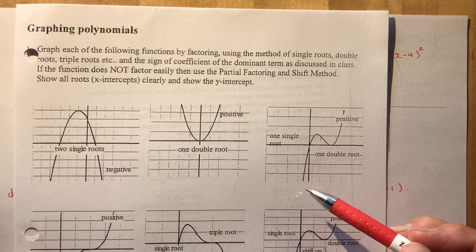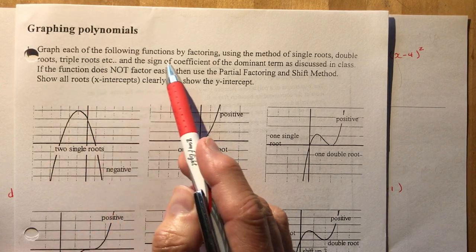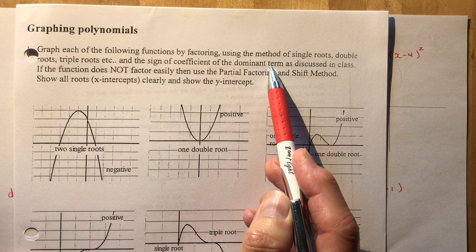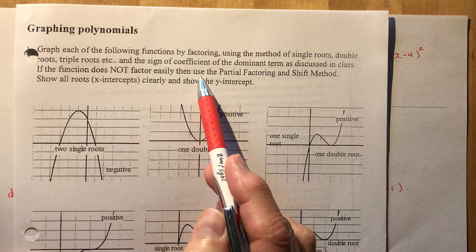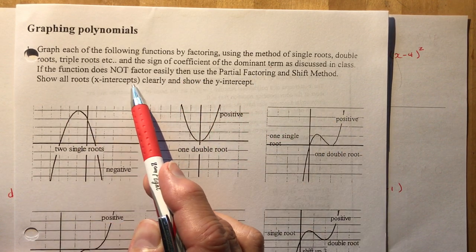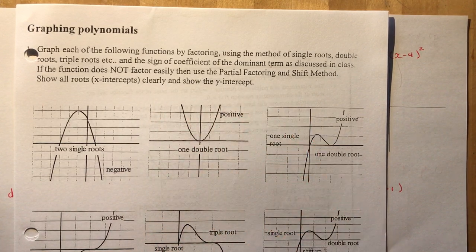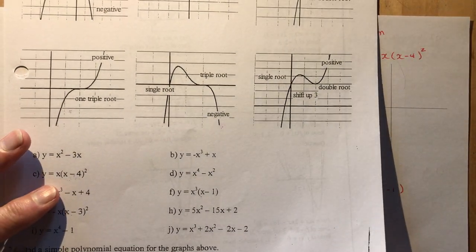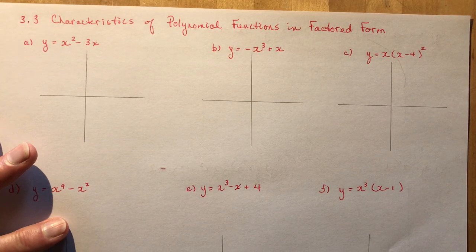We're going to graph functions A through J using the method of single, double, and triple roots, along with the sign of the leading coefficient as discussed in the last lesson. If the function does not factor easily, we'll use the partial factoring and shift method. Show all roots and x-intercepts clearly, and show the y-intercept. This handout is on my PBWiki site.